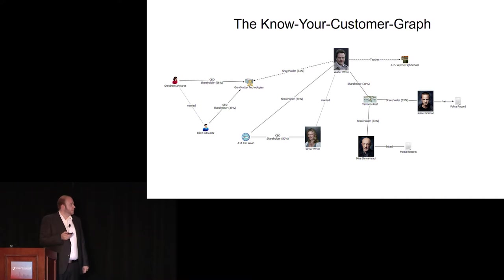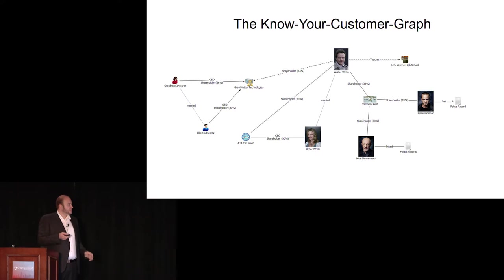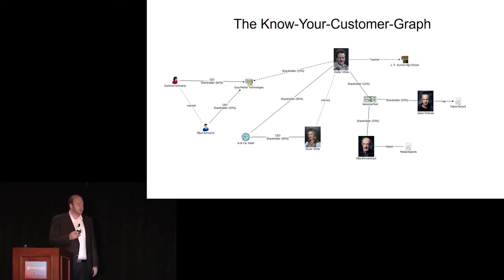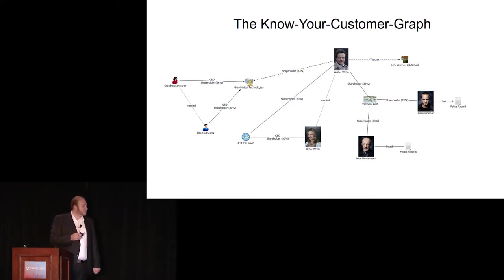The car wash he runs jointly with his wife — that looks normal. But if you look at the fumigation service, there are two business associates that are a little bit shady. You have Mr. Pinkman, who has a known criminal record for drug dealing, and Mr. Ermantraut, who was a former police officer who left the force on allegations of corruption — there are media reports.